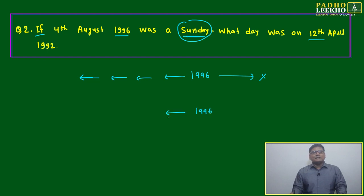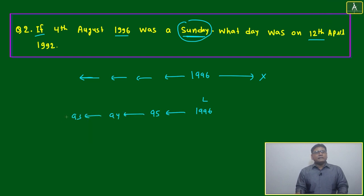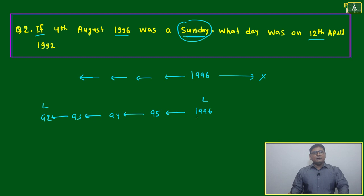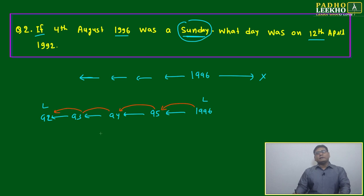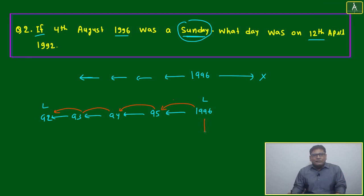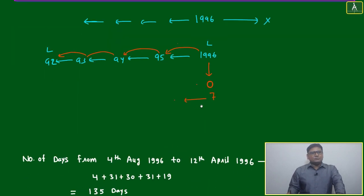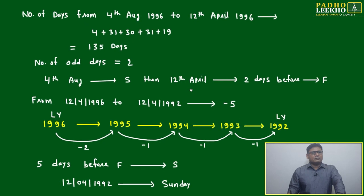From 1996 we go backward: 1995, 1994, 1993, 1992 — which is also a leap year. The purpose of this question is to show how movement works between two consecutive leap years. From 1996 to 1995 it will be minus 2; then minus 1, minus 1, depending on the date. Sunday means zero odd days, so: zero, then 7 minus 2 = 5, 5 minus 1 = 4, and so on.